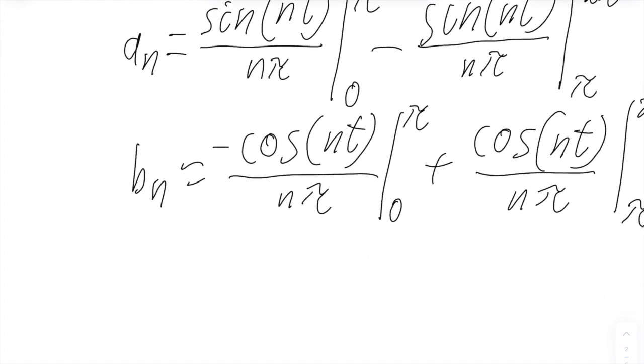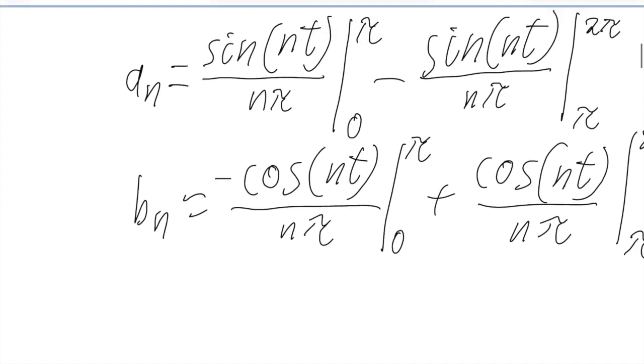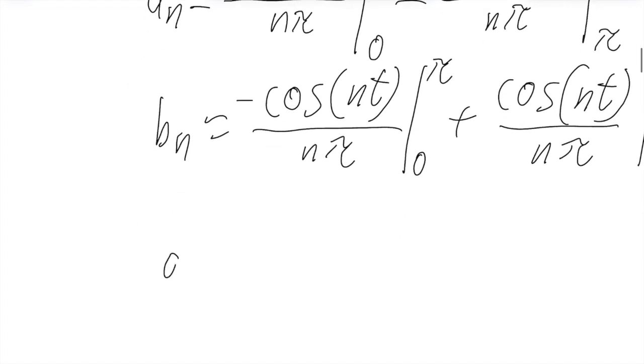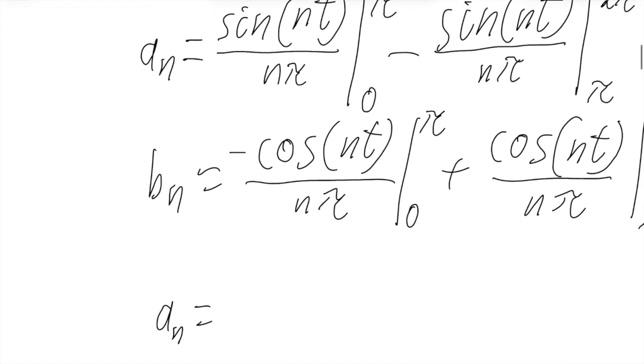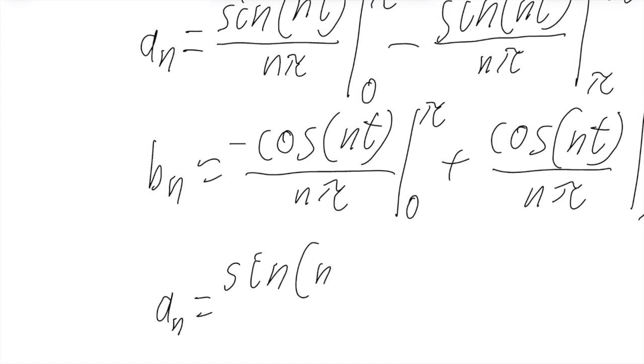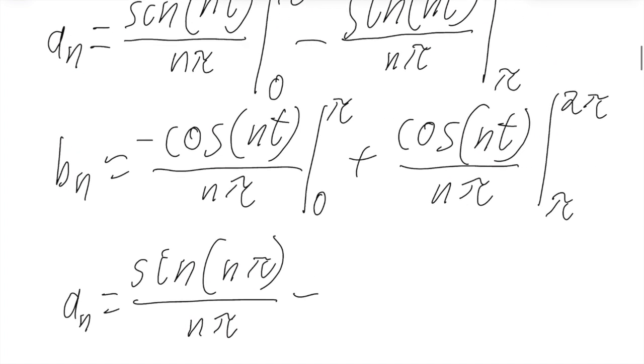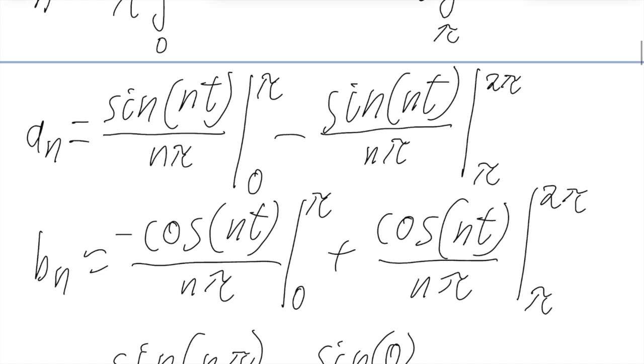So now let's start opening this up. So for the a_n, it'll start out with sine of nπ over nπ minus sine of 0 over nπ. There's more. But let's pause and just take a look at this. Sine of any multiple of π will always be 0. And sine of 0 will always be 0.